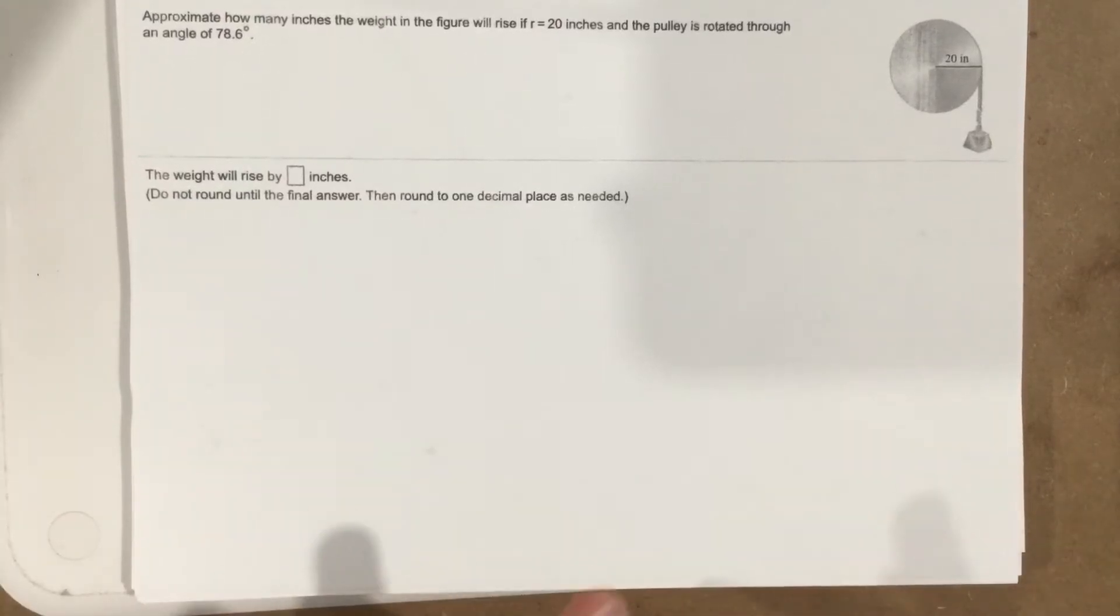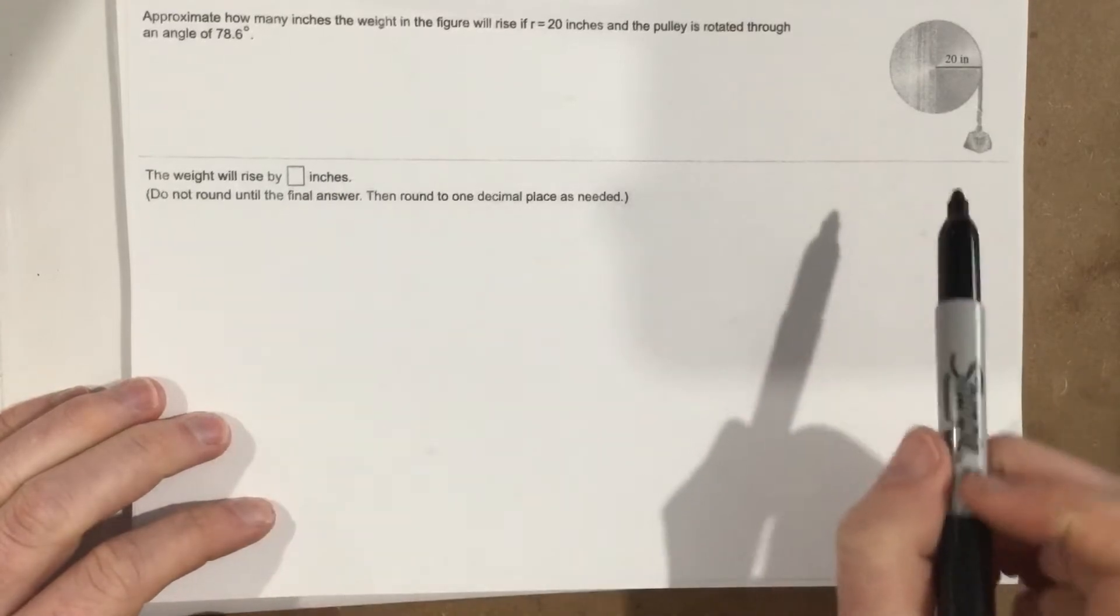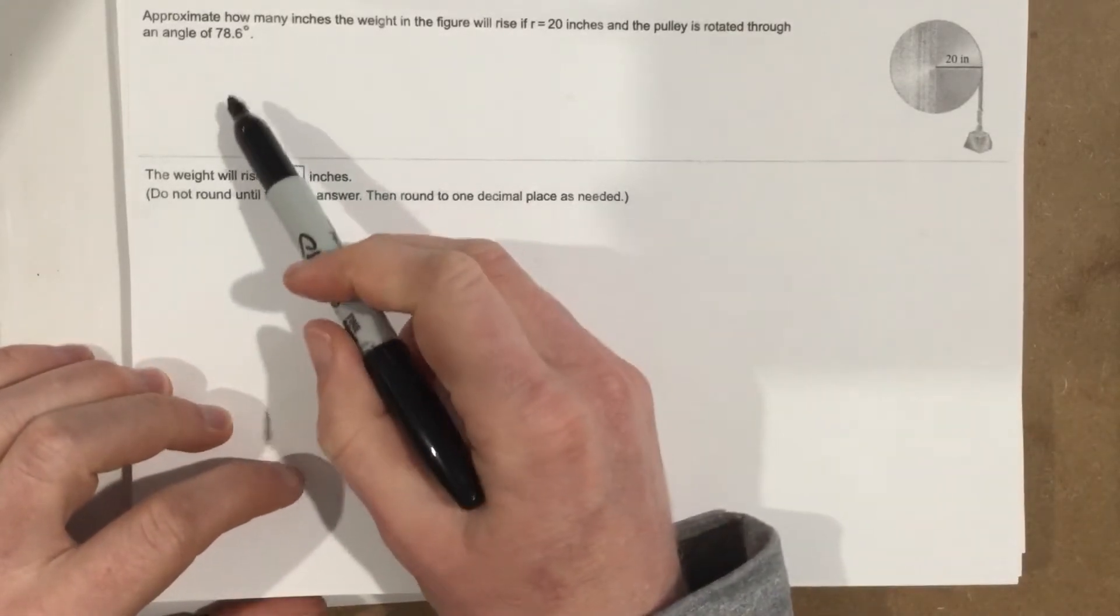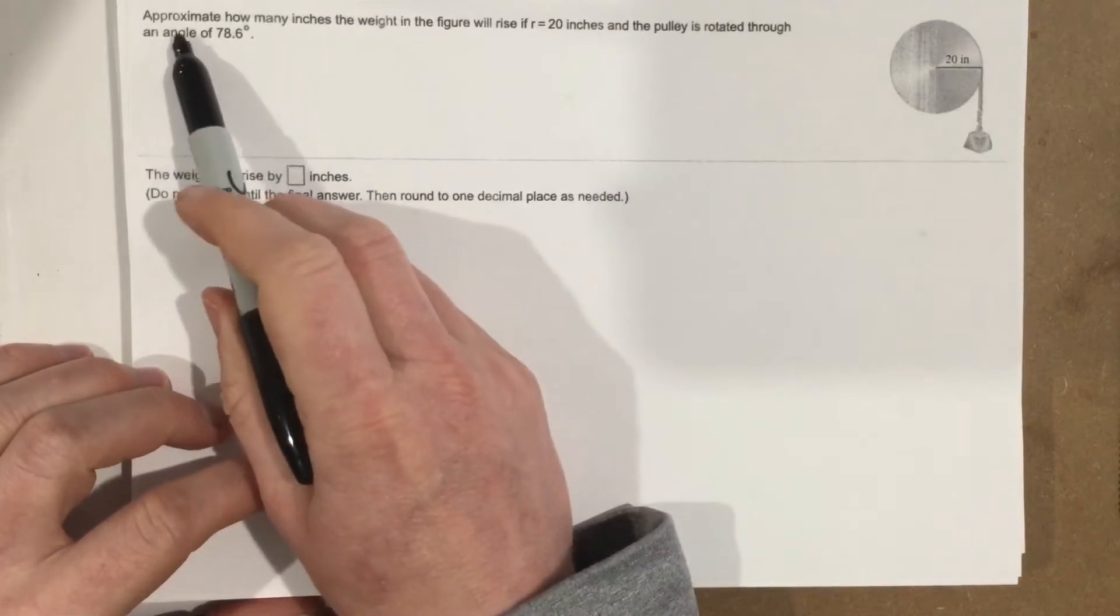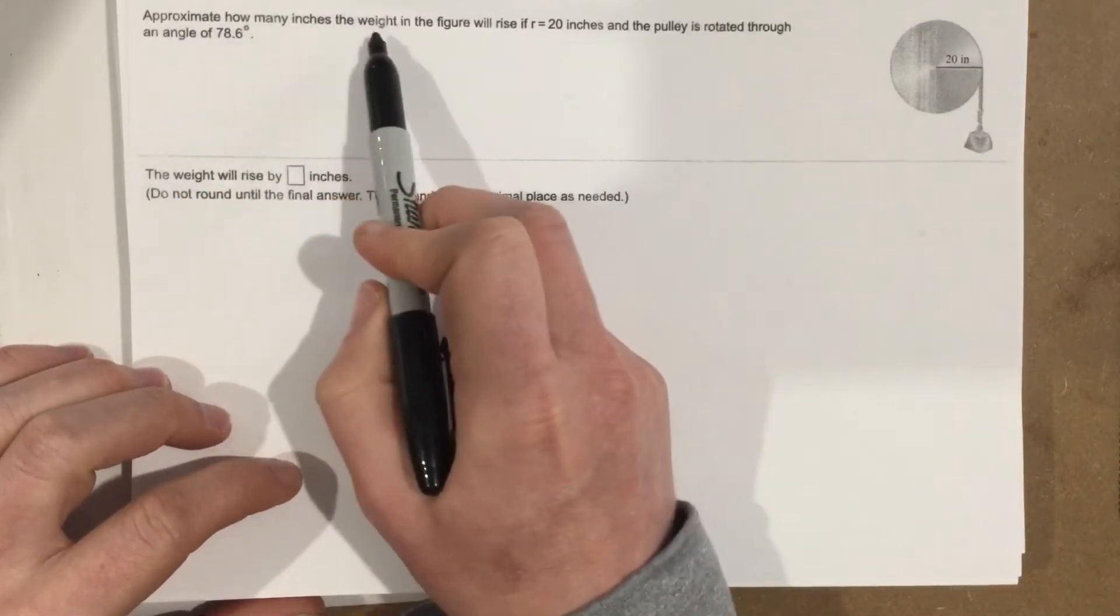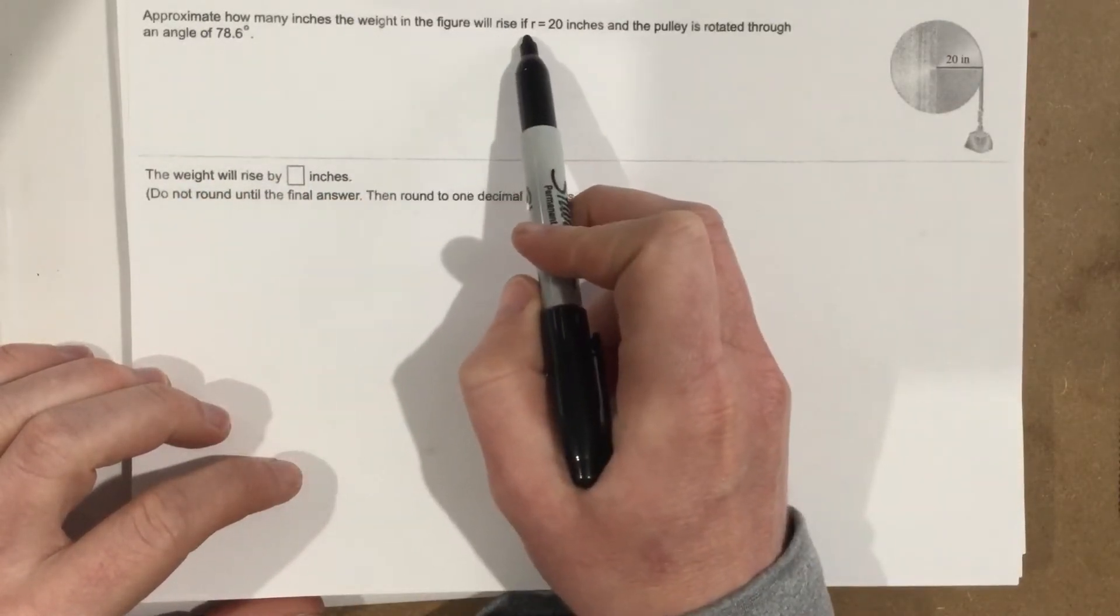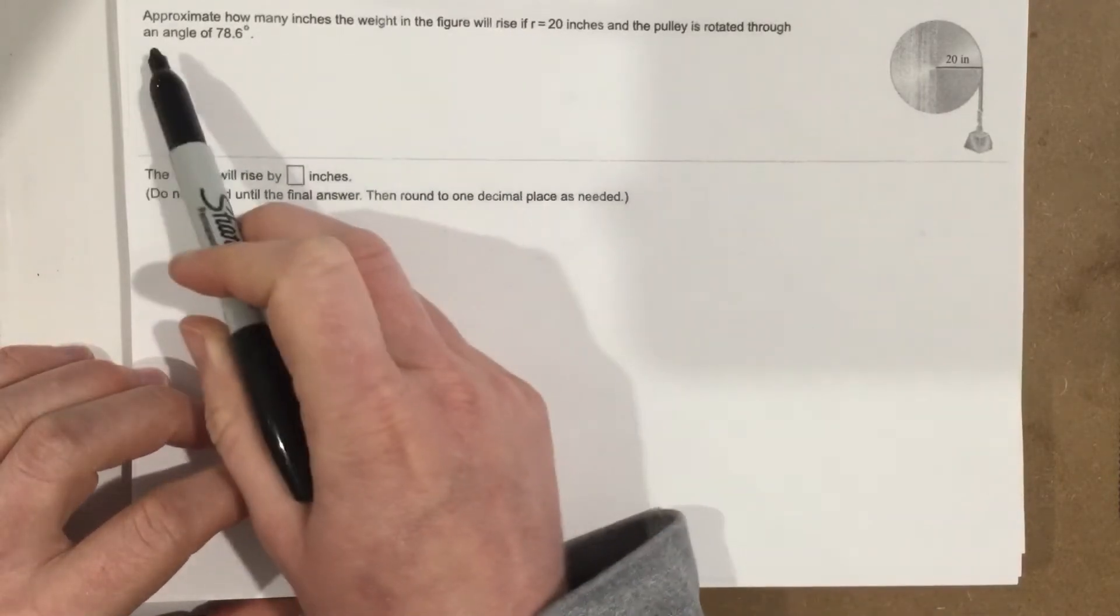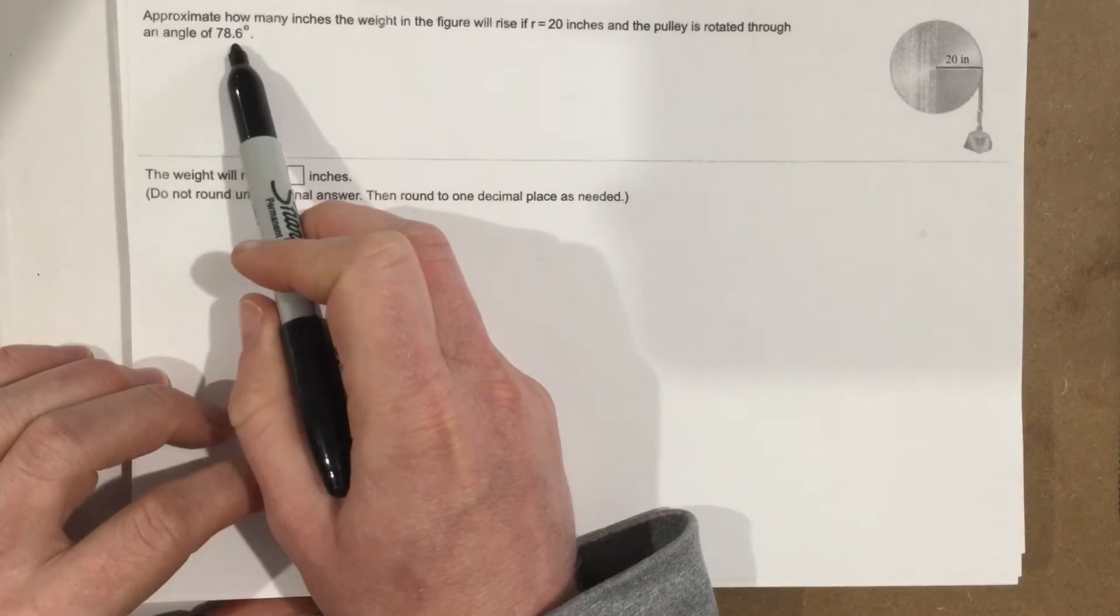This is problem number six from section 6.1. Now this problem is a good problem. It caused me some issues at first when I first did this problem last year, but it says approximate how many inches the weight in the figure will rise if r equals 20 inches and the pulley is rotated through an angle of 78.6 degrees.